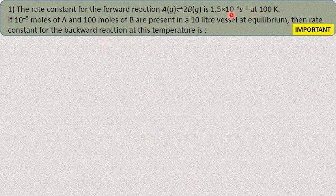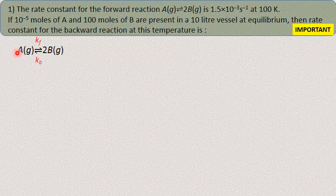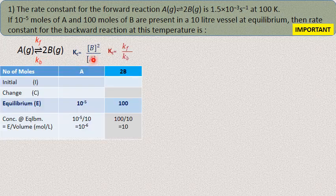What is given is the molar concentrations of A and B at equilibrium, so we can calculate Kc. Kf is known and we need to calculate Kb. The relationship is Kc = Kf / Kb. For reaction A → 2B, Kf is the rate constant for the forward reaction and Kb is for the backward reaction.